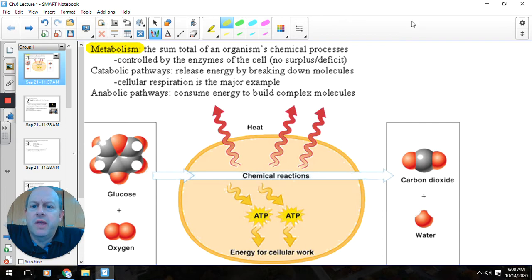So when we think metabolism, we usually think of eating food, digesting food, but the process is much bigger than that. It's really the total sum of all of an organism's chemical processes. So all of the reactants, products, the surpluses, the deficits of the cell. We can break that into two different things, catabolic and anabolic pathways.